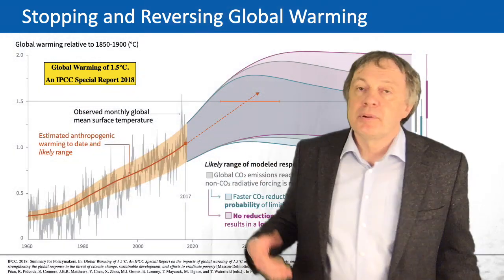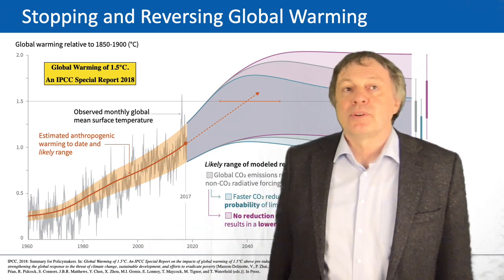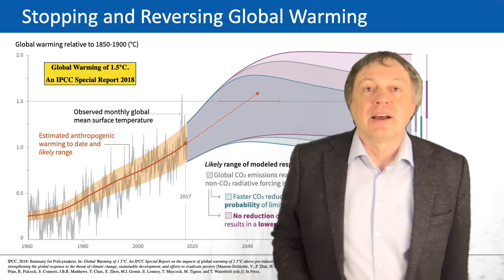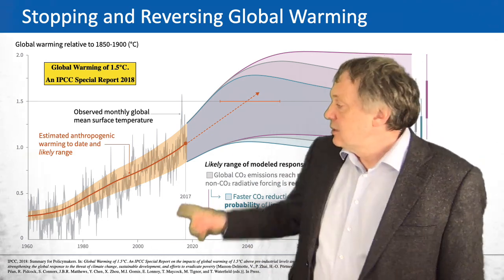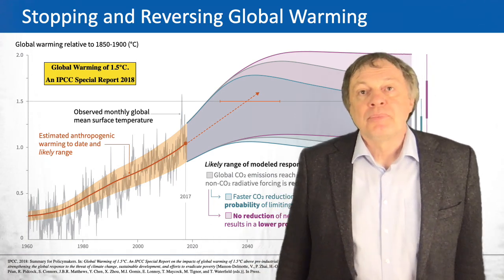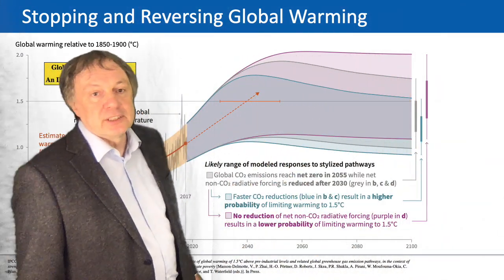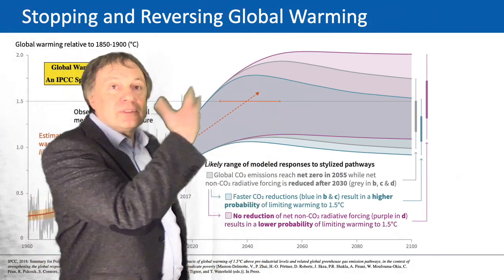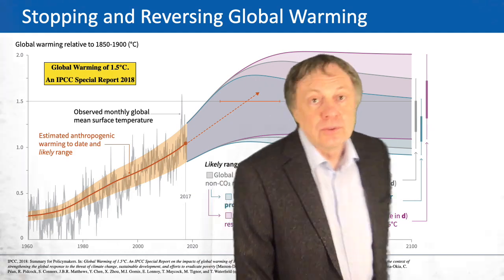Here you see a plot about several scenarios which limit the temperature increase to about 1.5 degrees Celsius. There are certain uncertainties, shown as the big bands you see. You can see the temperature rise as it happened until today, and on the right side of the diagram how it will continue under certain measures discussed in the report. Depending on the scenario it goes around 1.5 degrees Celsius, but it should always stay below 2 degrees.